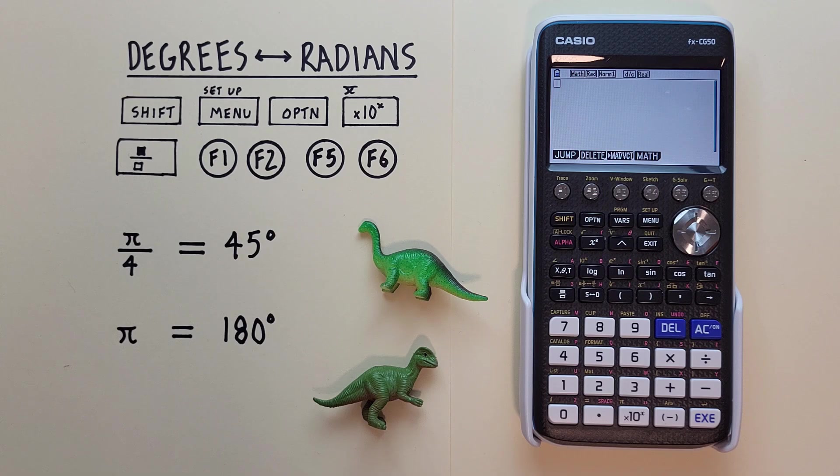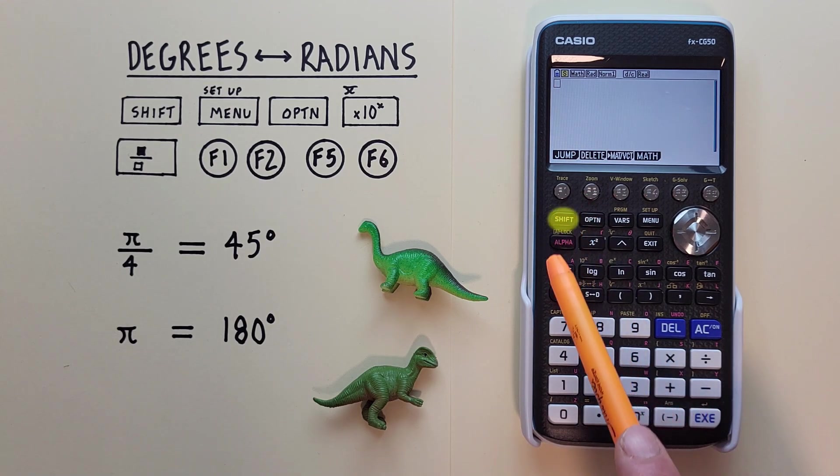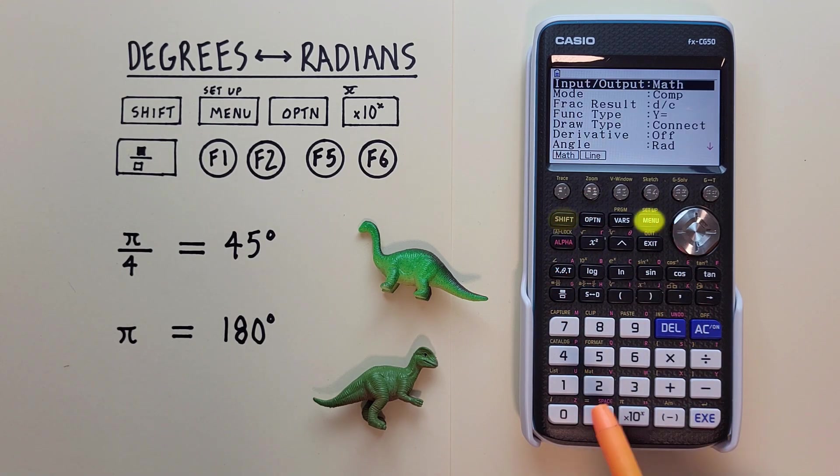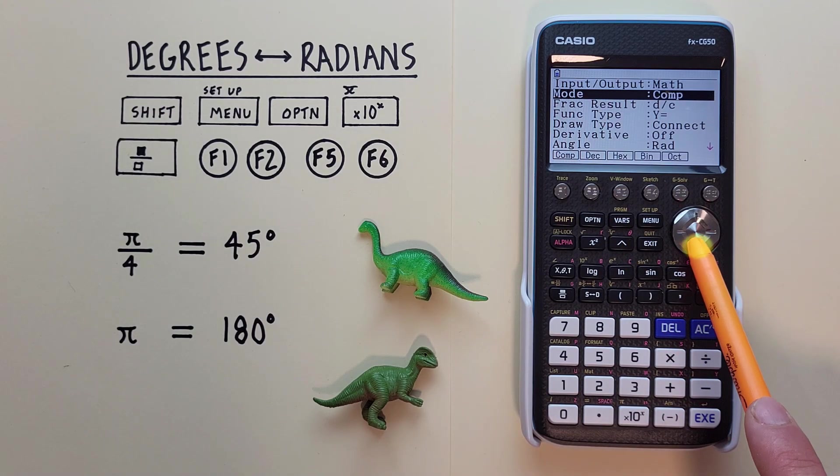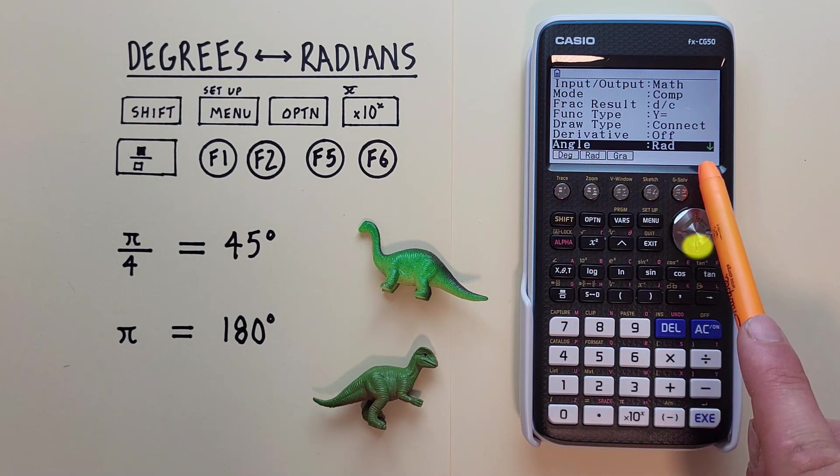So to do that, we press Shift and then the Menu key so that we see this screen here. We scroll down until we see Angle.